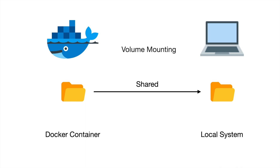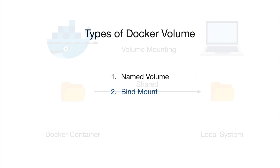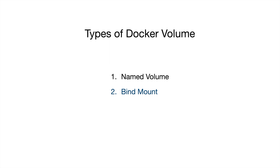This is known as volume mounting. There are basically two types of Docker volume: the first is named volume and the second is bind mount. Named volume is not commonly used, but bind mount is the one which is commonly used. In a previous Jenkins video, I used volume mounting to share the Docker container's file system with the host OS file system — that's the bind mount feature.